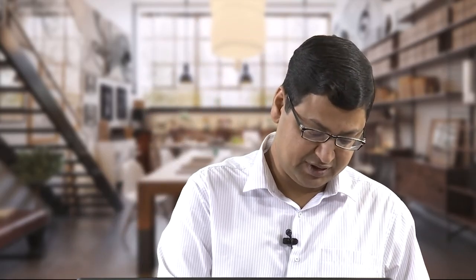What we have derived is: for an ideal chain, Rg squared = Re squared / 6, again in the ensemble-averaged sense, and this equals mb²/6.